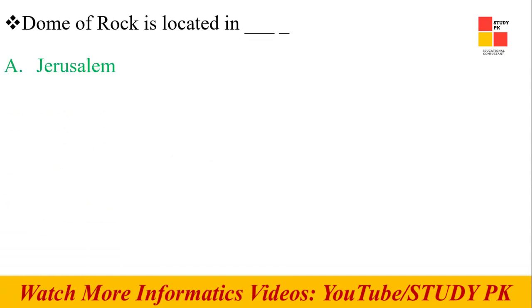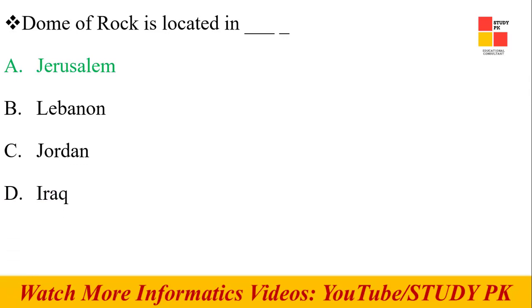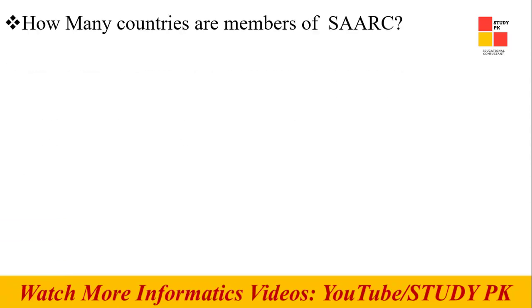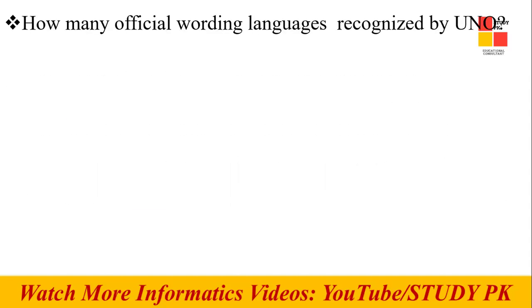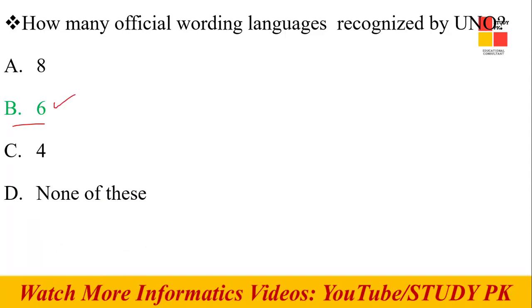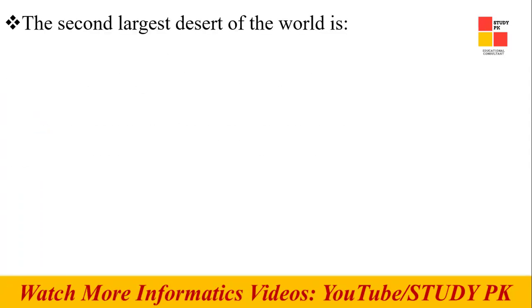Next question: The Dome of the Rock is located in Jerusalem. Next question: How many countries are members of the South Asian Association for Regional Cooperation (SAARC)? Total eight members. Next question: How many official working languages are recognized by the UN? Total six languages.